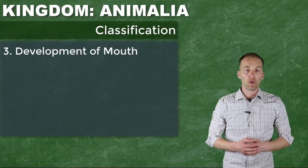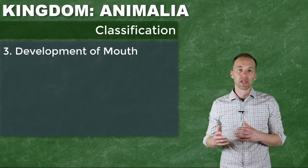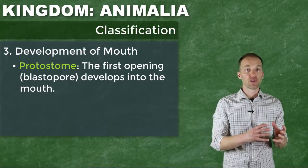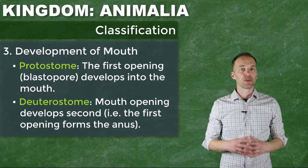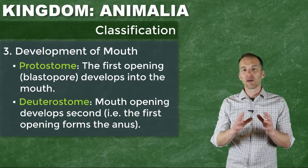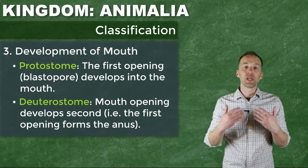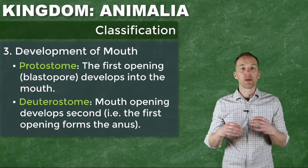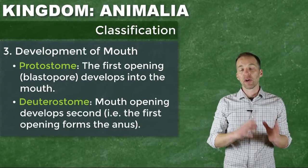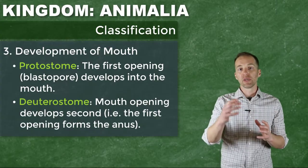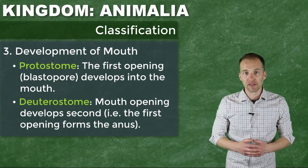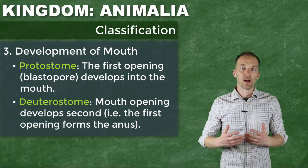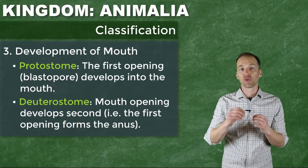We can also look at the development of the oral cavity. As the organism is developing, does the oral cavity — the mouth — develop first? This is what we refer to as a protostome. Or does it develop second? This is what we refer to as a deuterostome. All of these things will become clearer as we go through a progression in the complexity of these organisms. Just like we did with the plants, I'm going to ask you to envision moving through these different groupings of organisms within the animal kingdom in terms of increasing complexity.